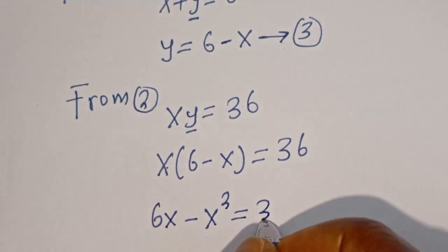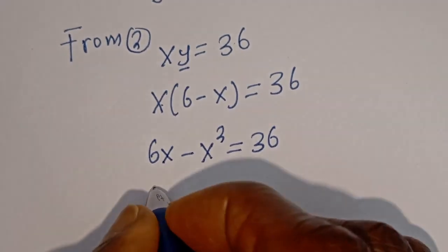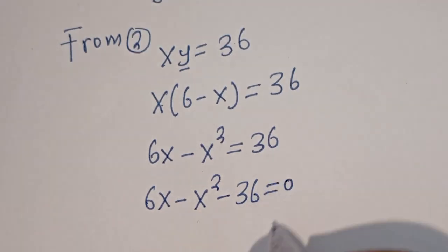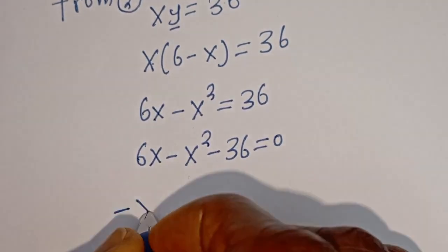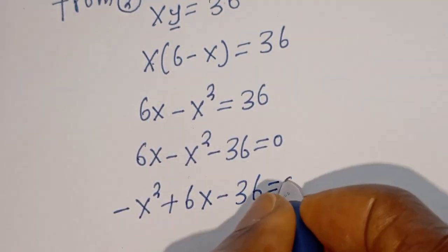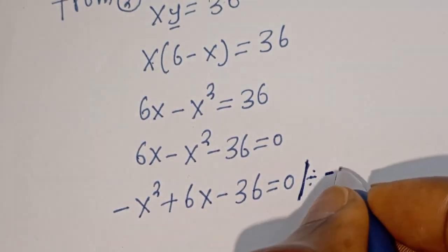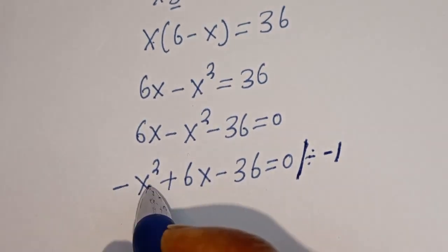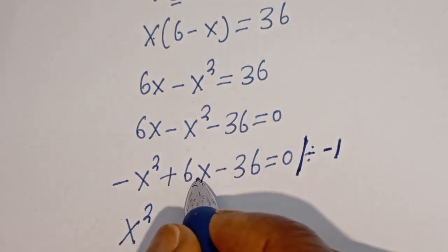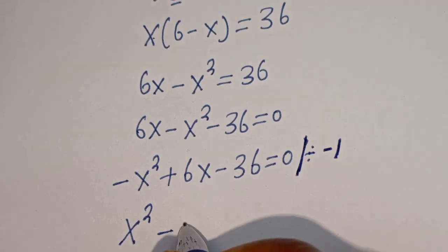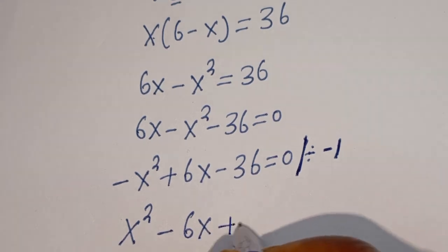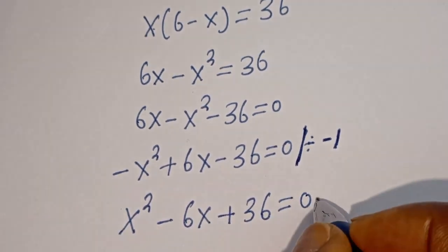So 6s minus s squared is equal to 36, which equals 0. Then we can rearrange. Multiplying through by negative 1, this gives us s squared minus 6s plus 36 equal to zero. And this is a quadratic equation.